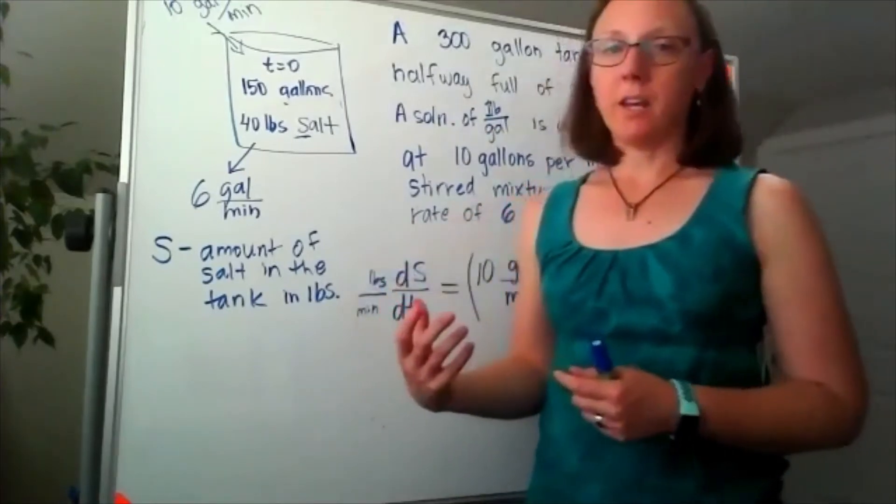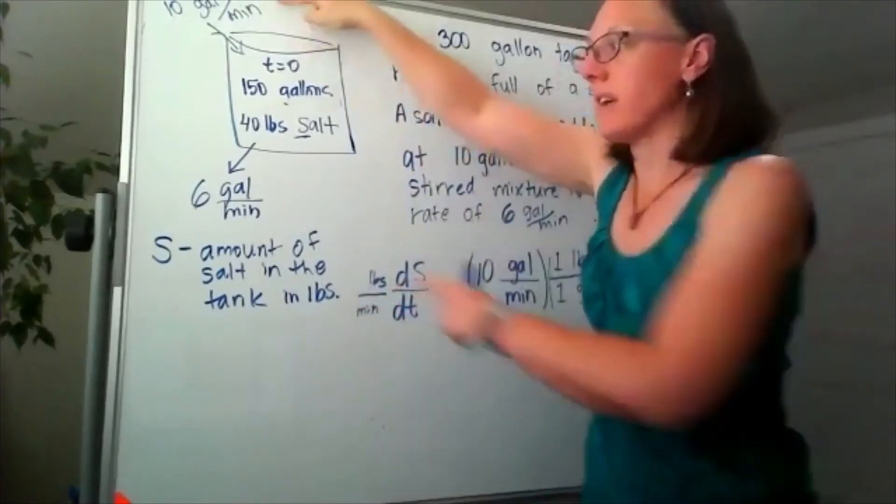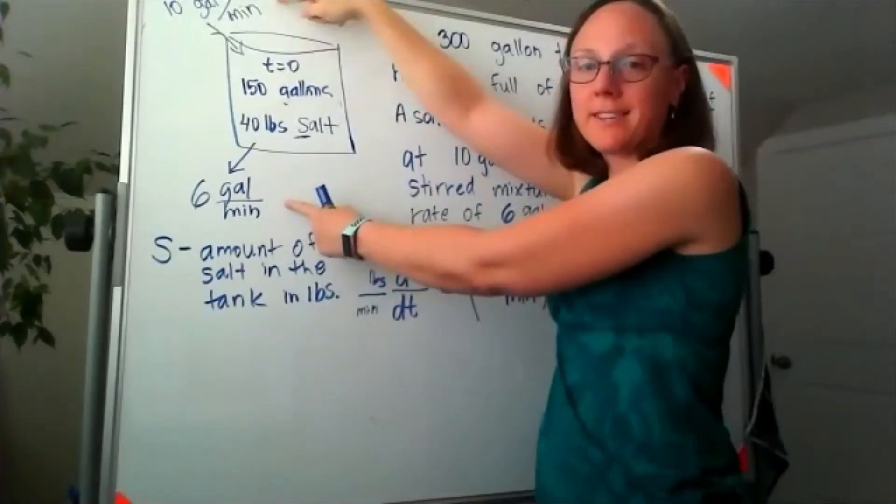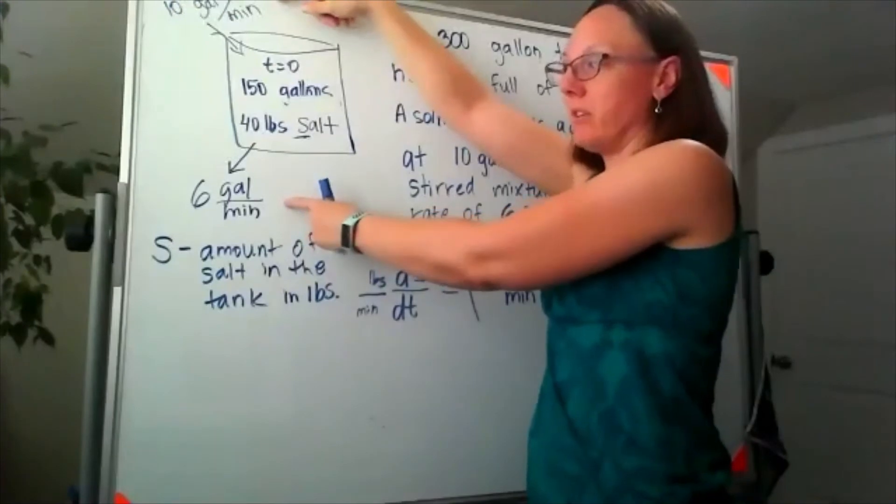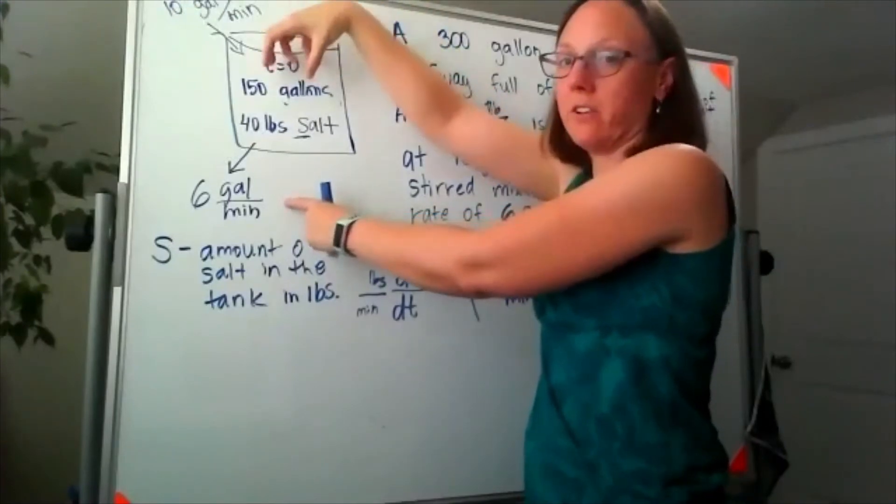So each minute I'm pouring 10 gallons in but I'm only removing six gallons. So each minute I have a buildup of four extra gallons in the tank.